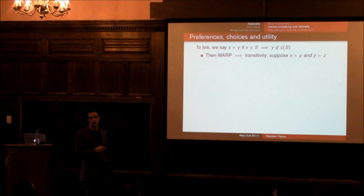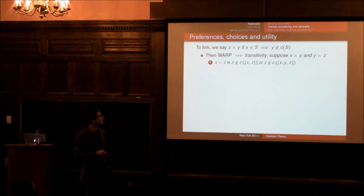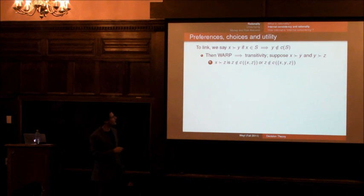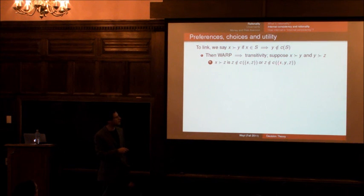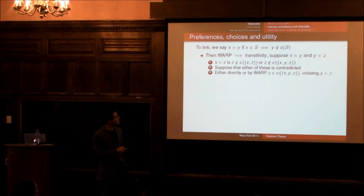So if you choose x from a set, then x and y, then you would always choose x from a set between x and z. Yes. That's correct. That's basically right. So imagine that x is strictly... x being strictly preferred to z in this context means that you don't choose z from the set x and z. And you don't choose z from the set x, y, z. Right? And suppose that either of these is contradicted. Well, imagine that z...